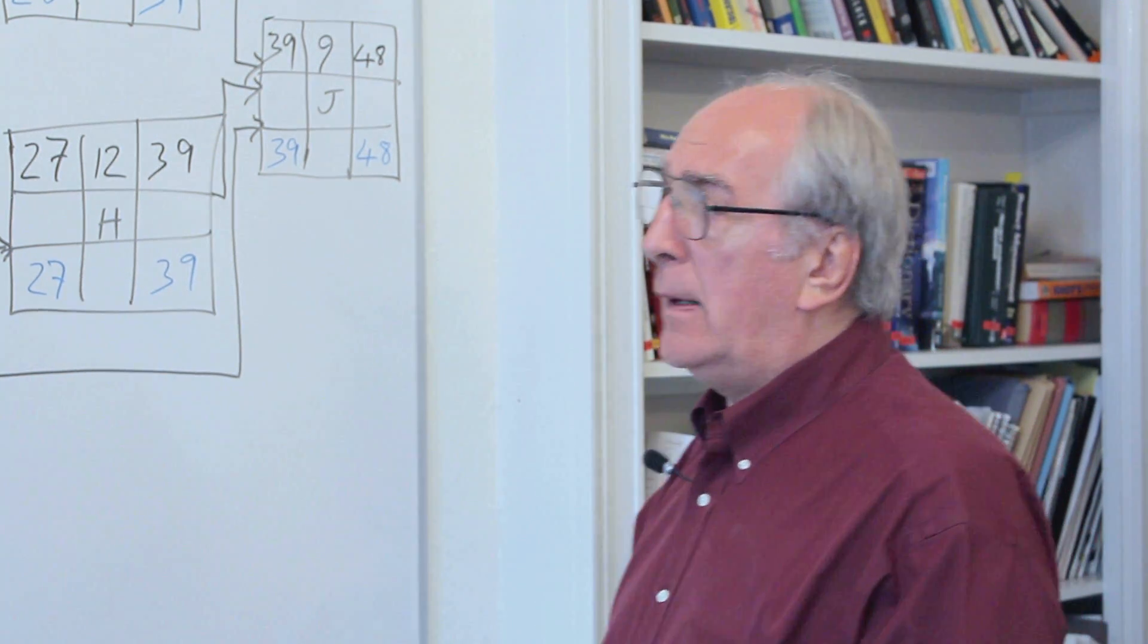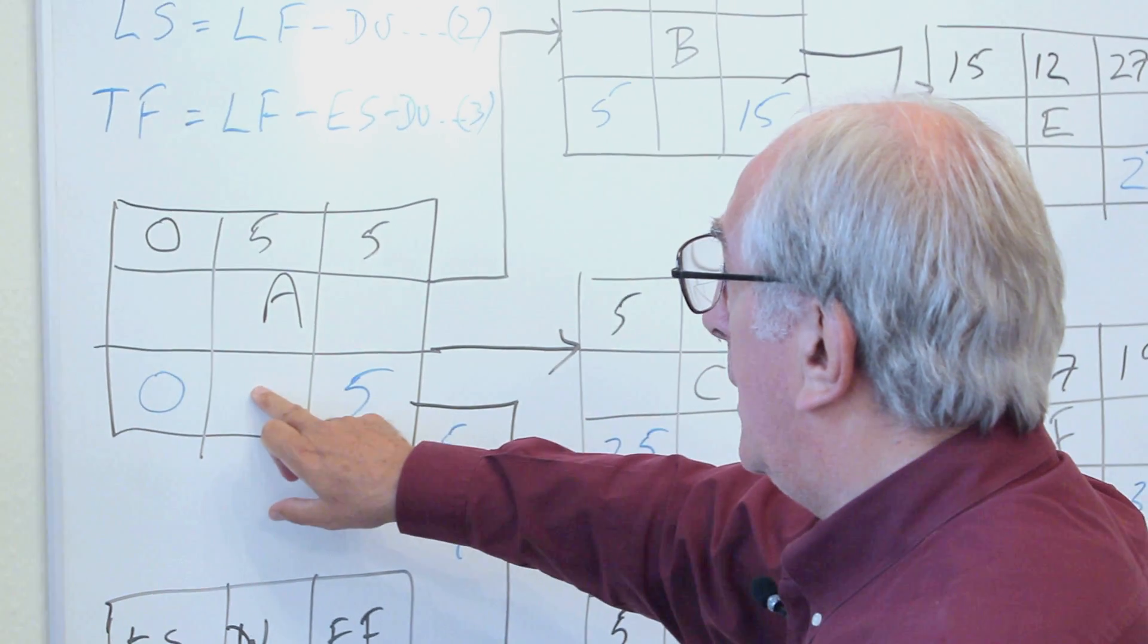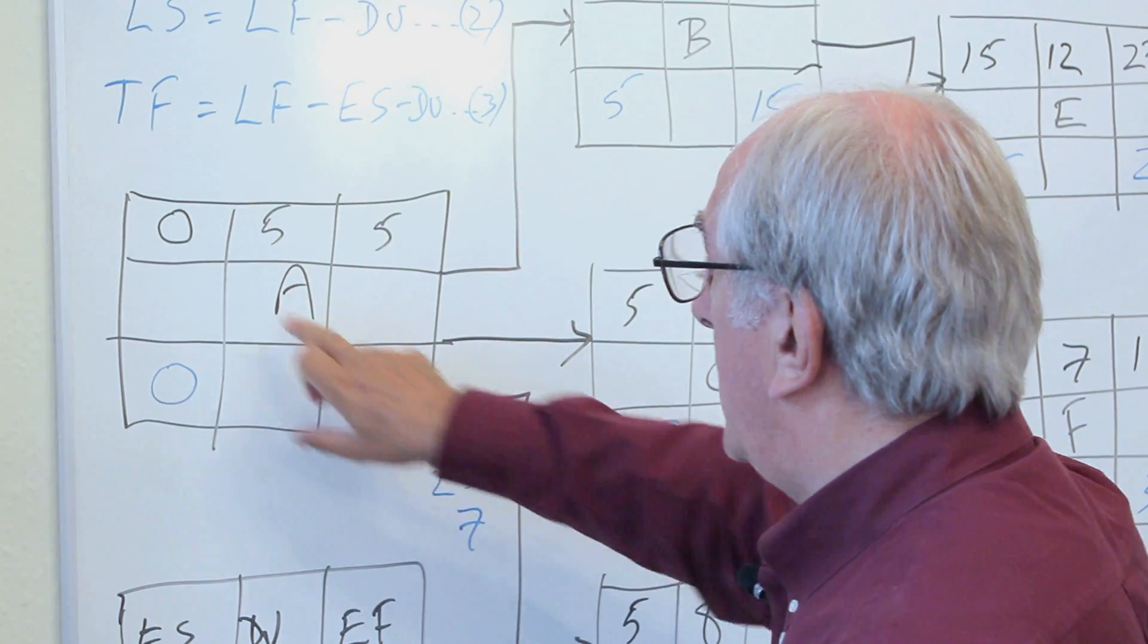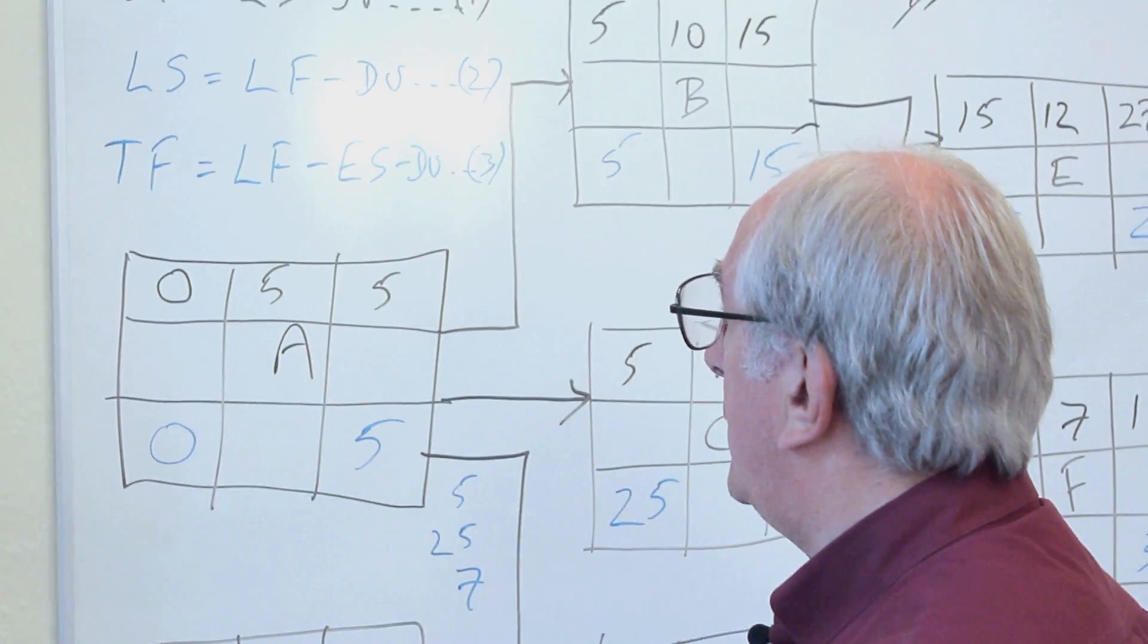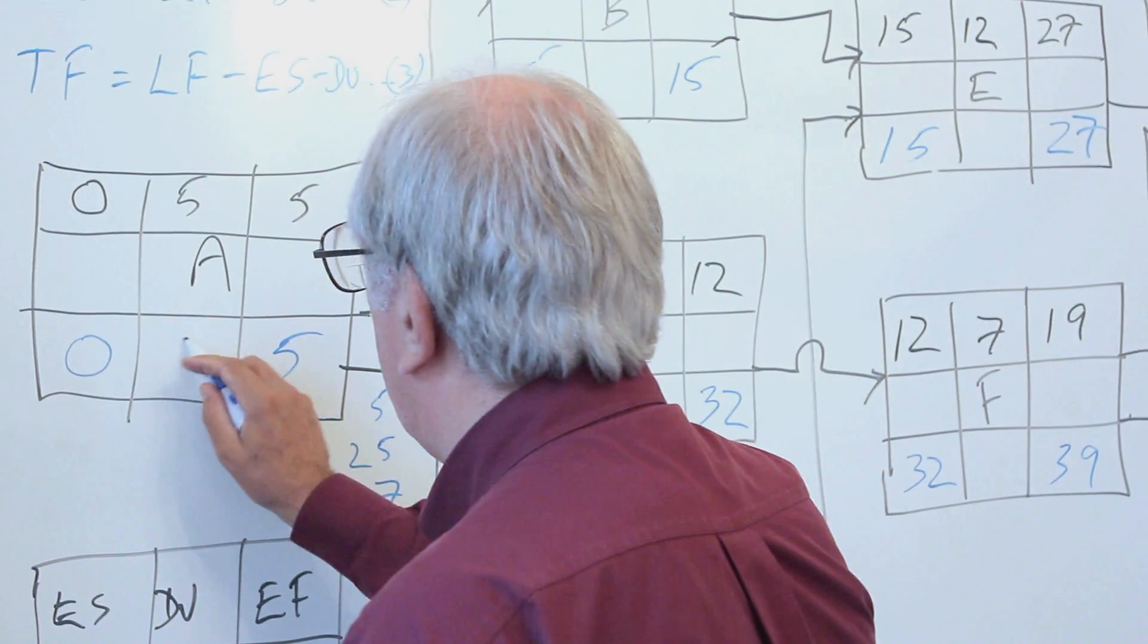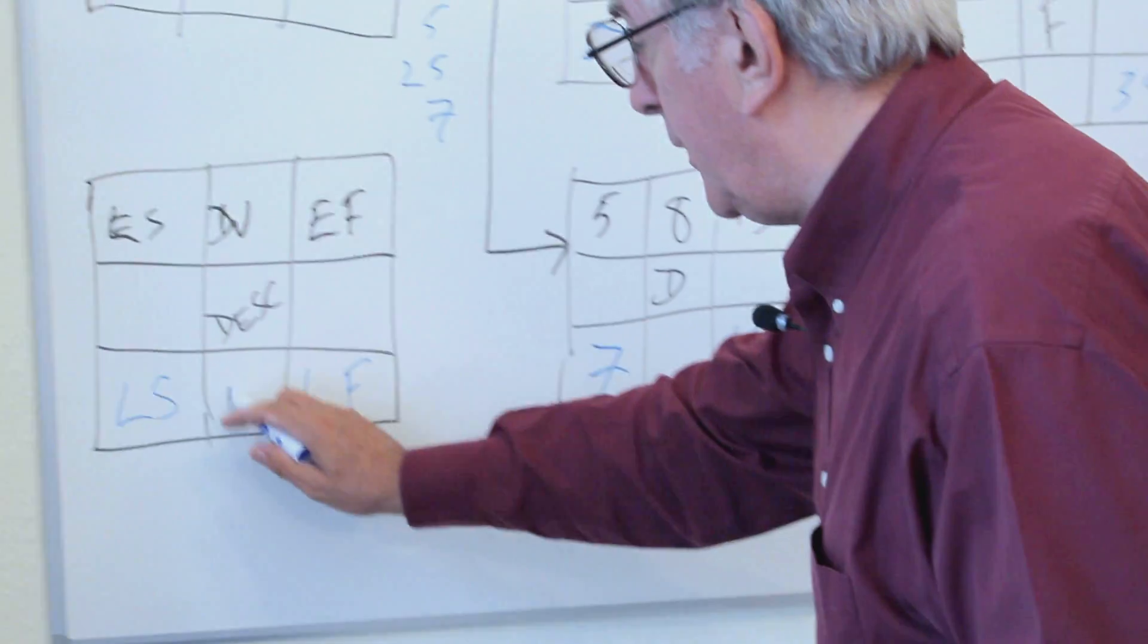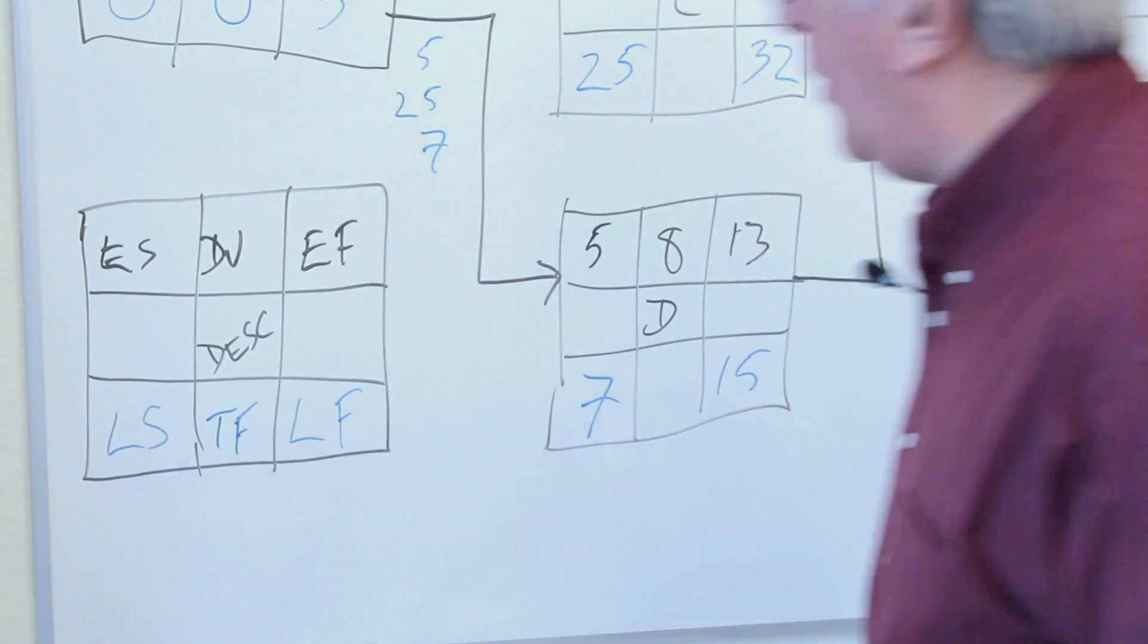So armed with that one, we can start anywhere on here and work out what our floats are. So very simply, the total float on activity A is the late finish of five minus the early start of zero minus the duration of five, and that gives us simply zero. So our float there is zero, and I forgot to mention that that's what goes in this cell down here, the total float, that little cell at the bottom.